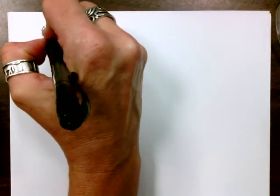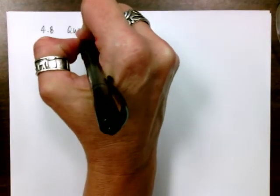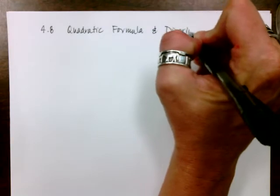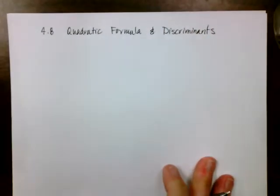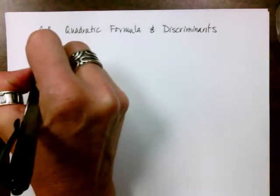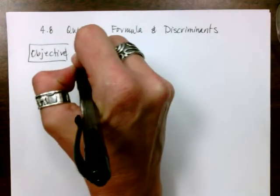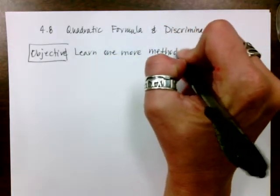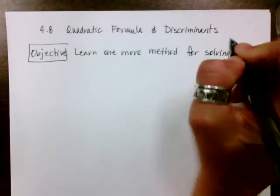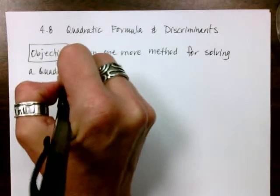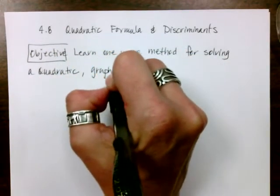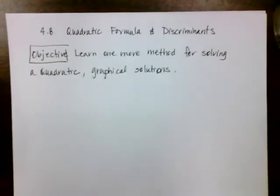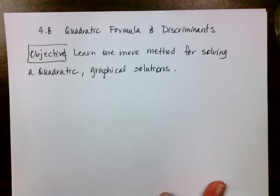We are going to do section 4.8, which is the quadratic formula and discriminants. The objective is to learn one more method for solving a quadratic, and then we're going to talk about some graphical solutions. So those are the topics for the day: one more method for solving a quadratic and your graphical solutions.